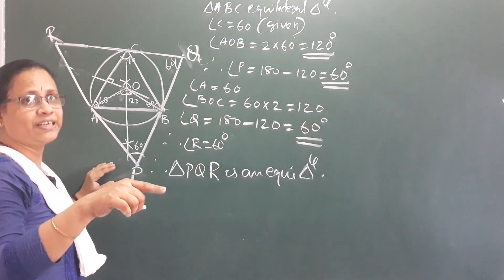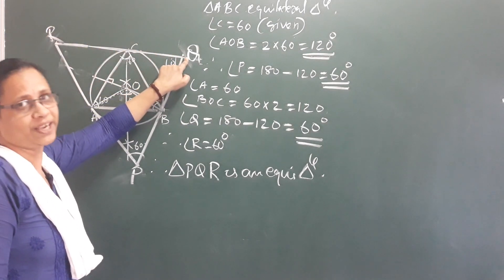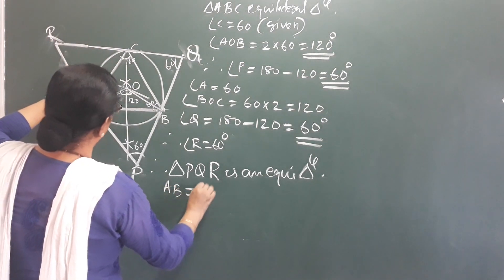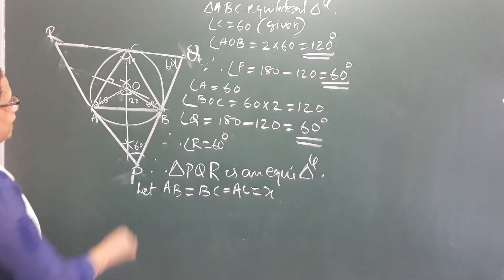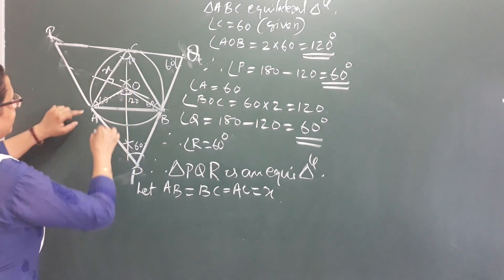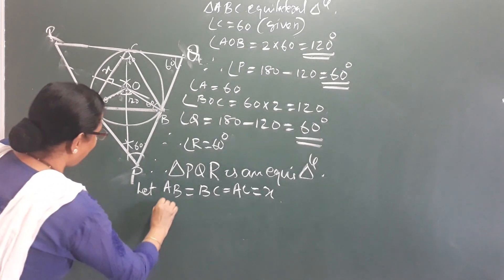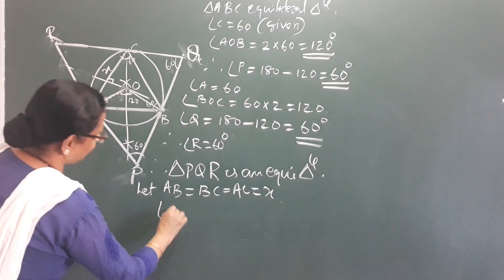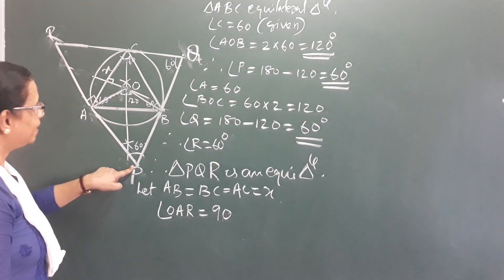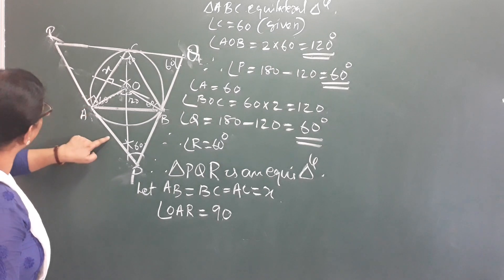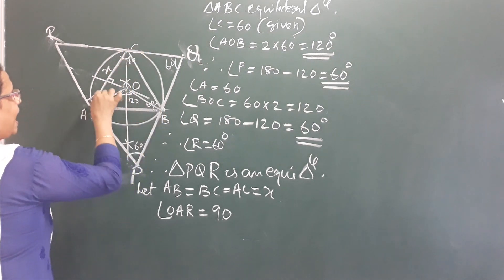The second question is: we are going to prove the length. Let A, B equal to B, C equal to A, C equal to X. We are going to prove this. Look at this — this is 90. Angle O, A, R is equal to 90 degrees. That is, O, A is perpendicular to PR. PR is perpendicular. We are going to prove this angle A is 60 degrees.